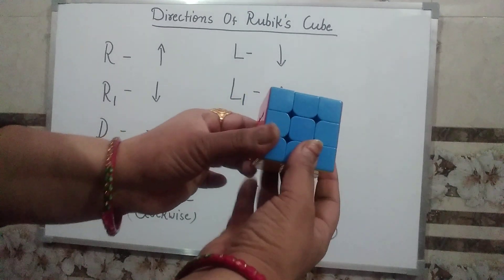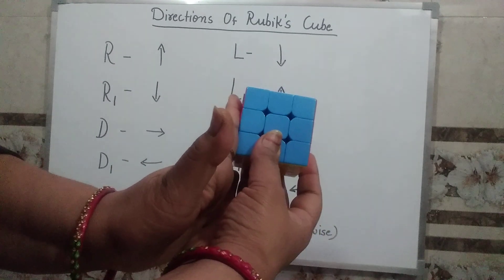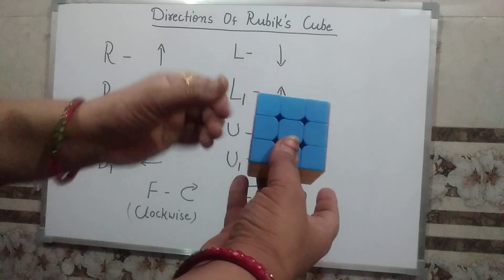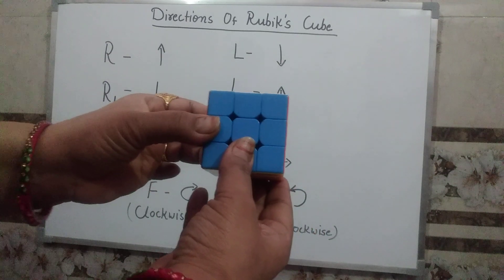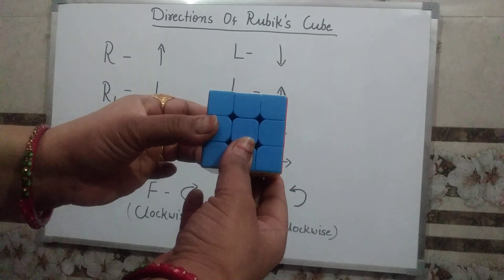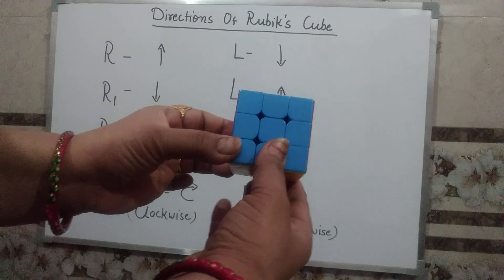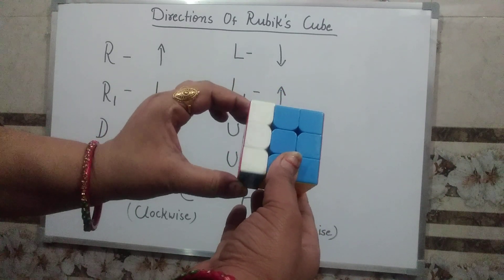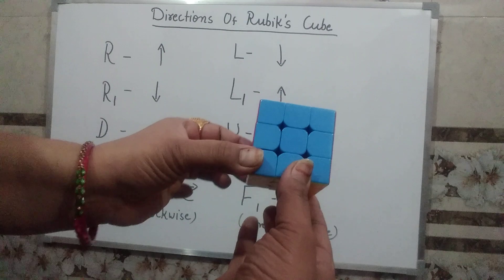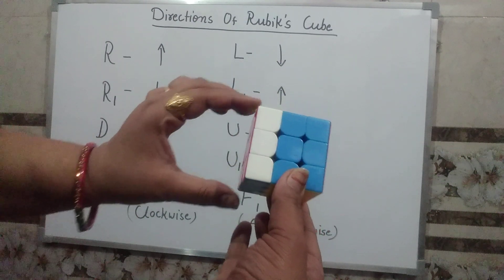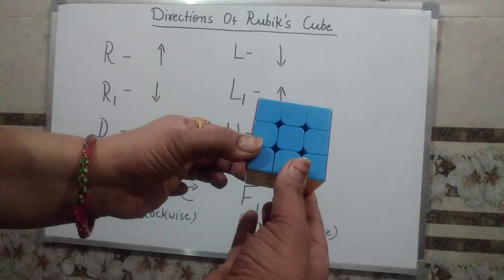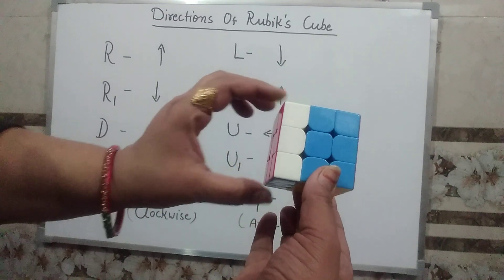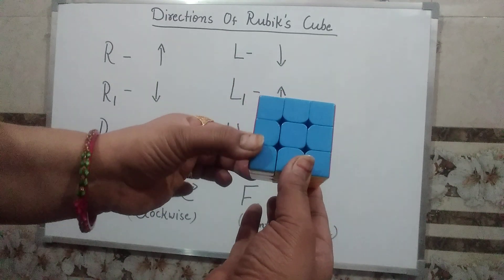Now this is the left side, and the left side is opposite of the R side, so its directions are also opposite of the R side. This is L and this is L1. Once again, this is L and this is L1.